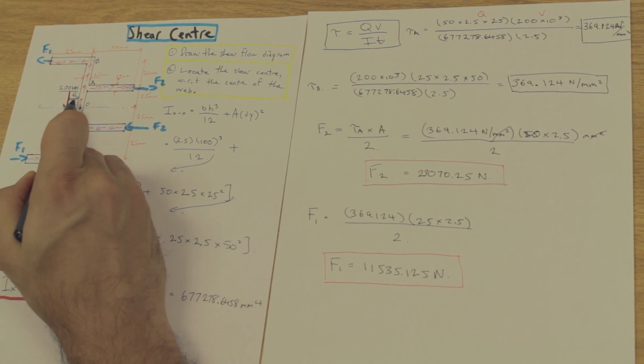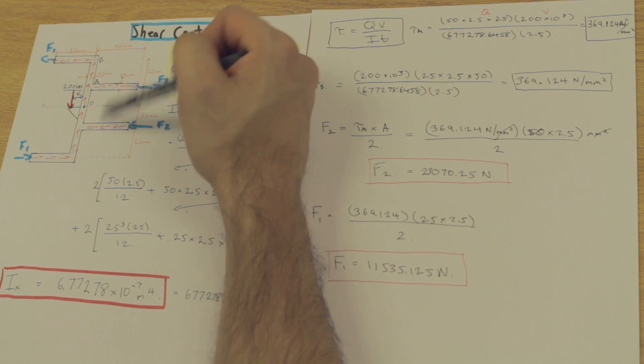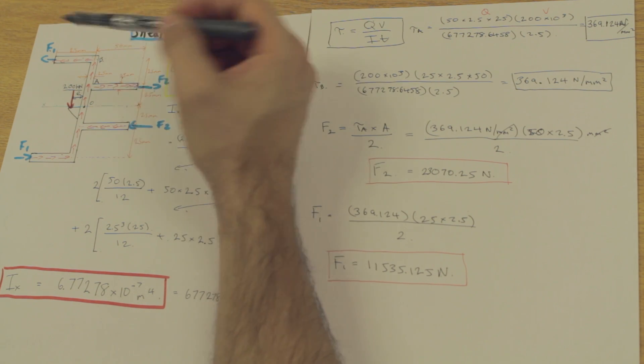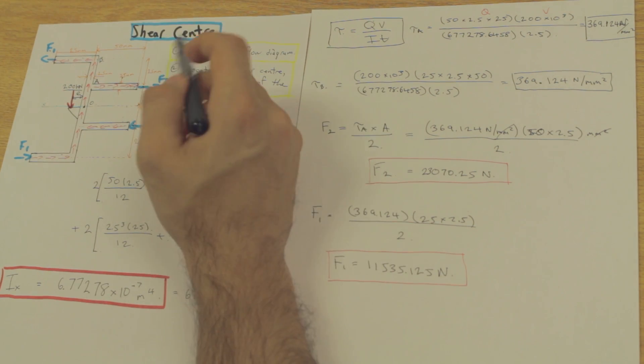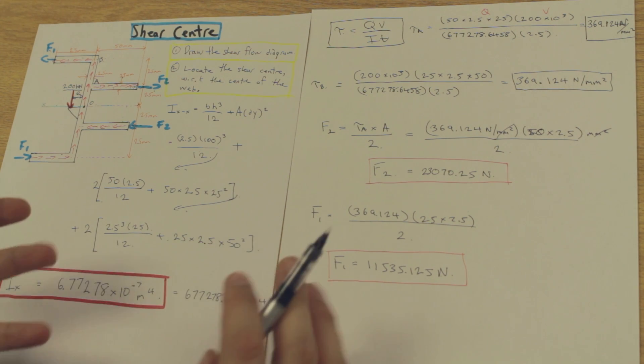How we're going to do that is we're going to take the moments that are created by these couple moments. And in doing so, we are going to equal them to zero, because if you remember in the first question, the shear center is the point in an unsymmetrical beam where we can load and have no twisting.